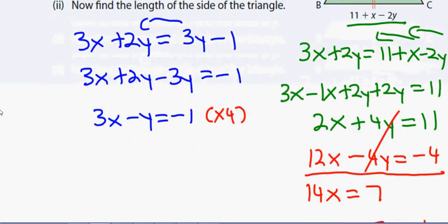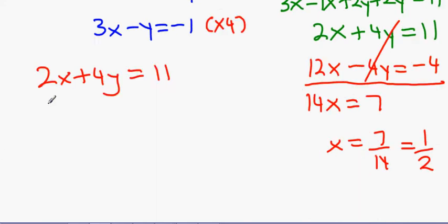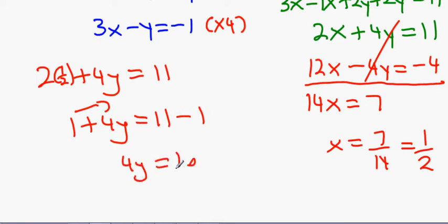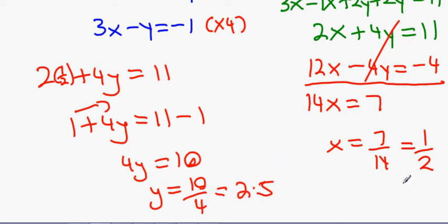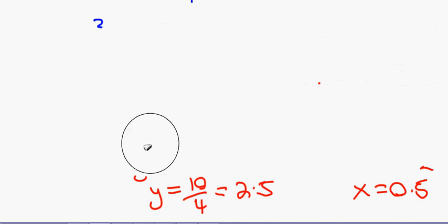Using 2x plus 4y equals 11 with x equals one half: 2 times one half is 1, so 1 plus 4y equals 11. Bringing the 1 over: 4y equals 10, so y equals 10 divided by 4, which is 2.5. So x equals 0.5 and y equals 2.5.